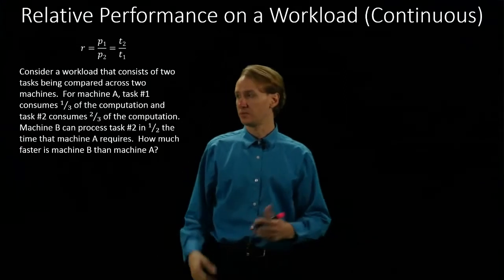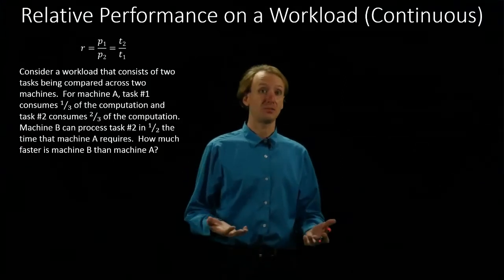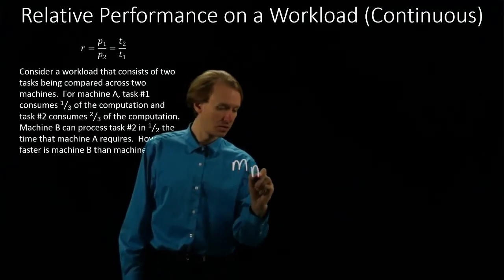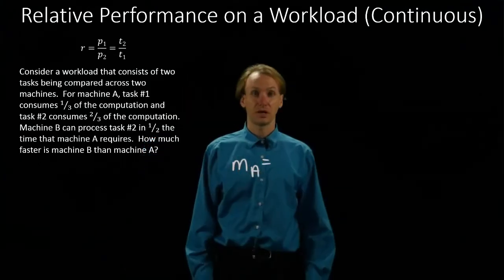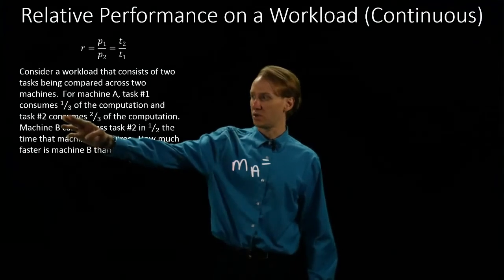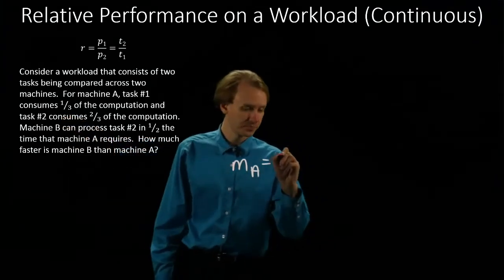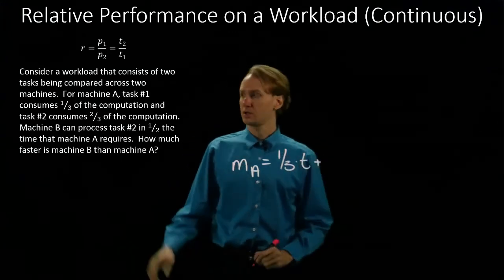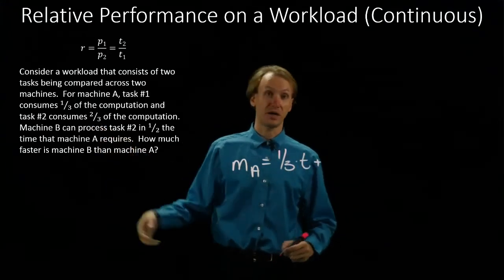So again, we'll begin by calculating how much time each of these machines should take to run. Machine A is spending one-third of its time on task number one and the other two-thirds of its time on task two.